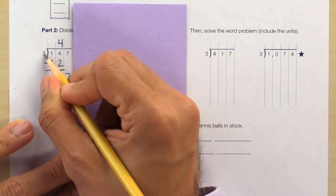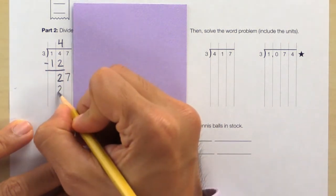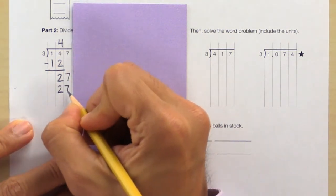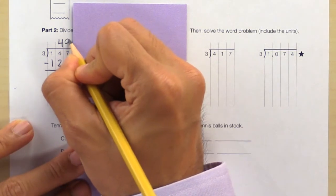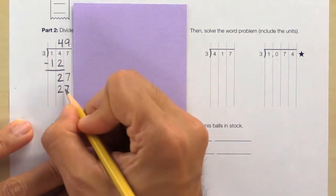Can you do 27 divided by 3 evenly? Yes, so write it down. If 27 divided by 3 equals 9, then 9 times 3 equals 27.